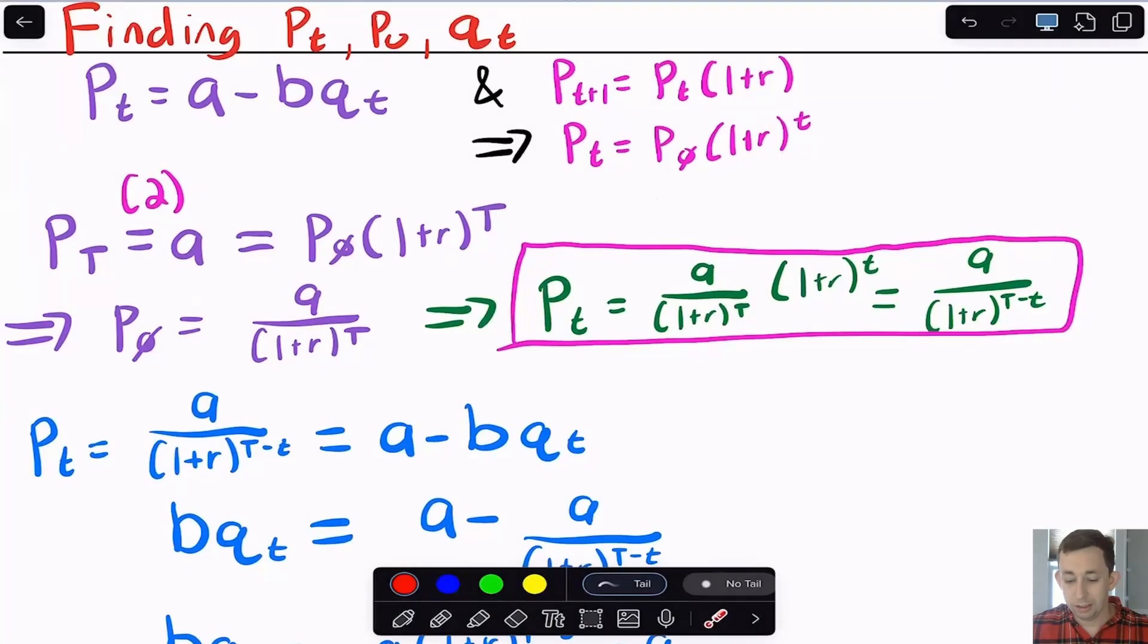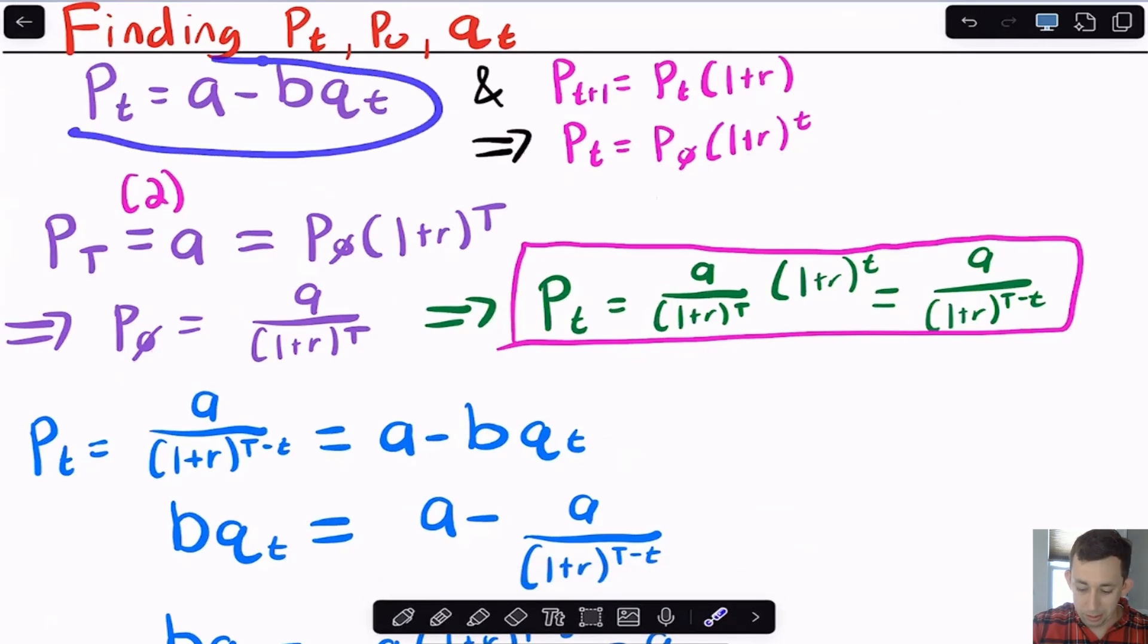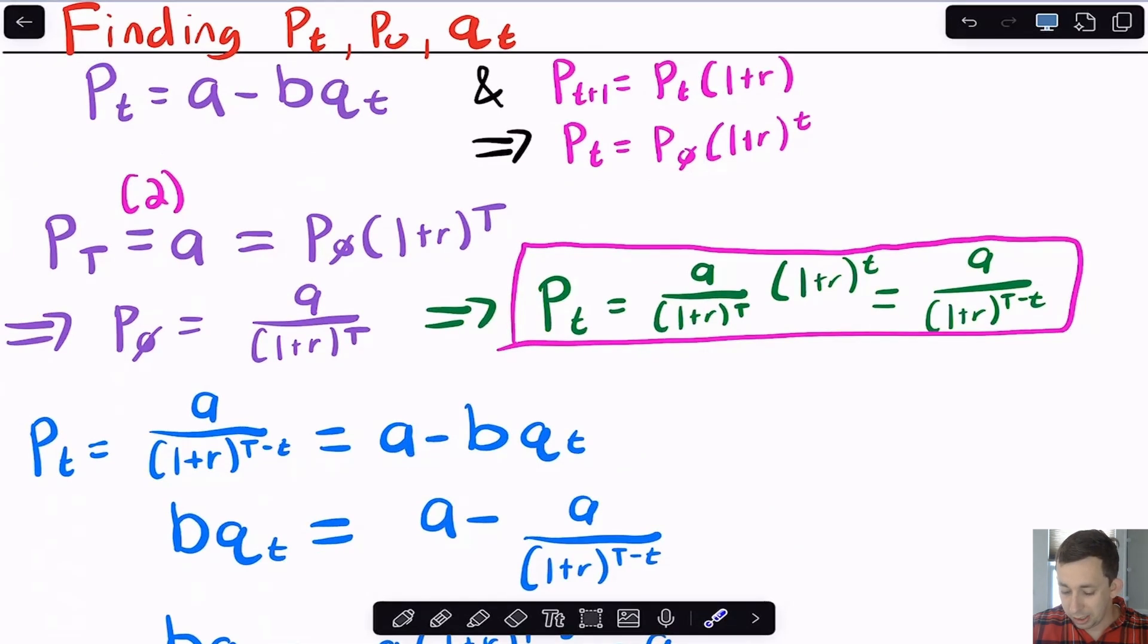So first, what we're going to do is we're going to find PT or the trajectory of prices. And all we're going to do for that is we're just going to say, okay, well, here's a demand function. We know that tomorrow's price is today's price times one plus R, because we know that prices are going up at the interest rate. So if we go all the way back to P0, if we keep filling this in, and again, if this is not enough, feel free to leave a comment below. And I'll try to add a little bit of explanation here.